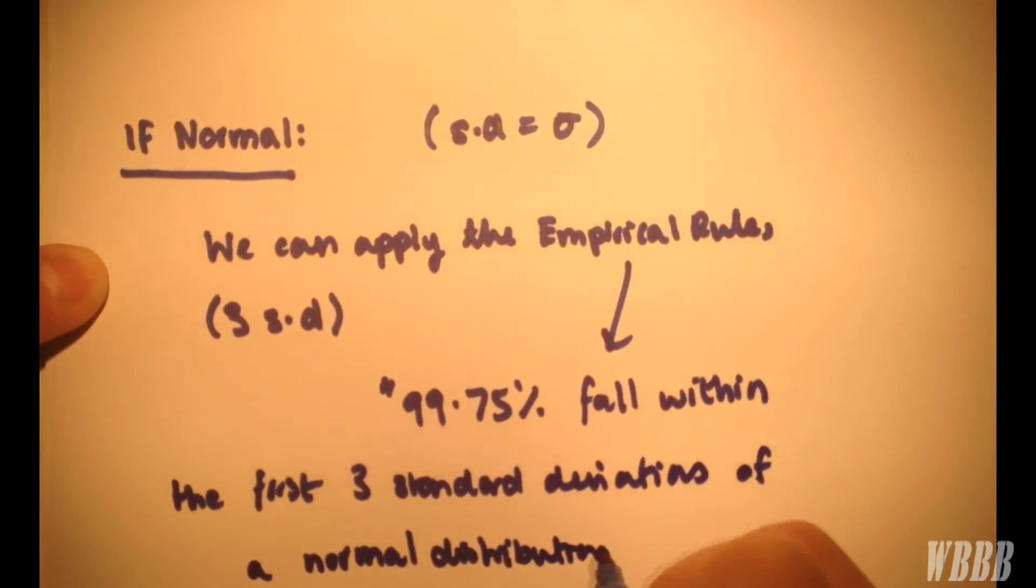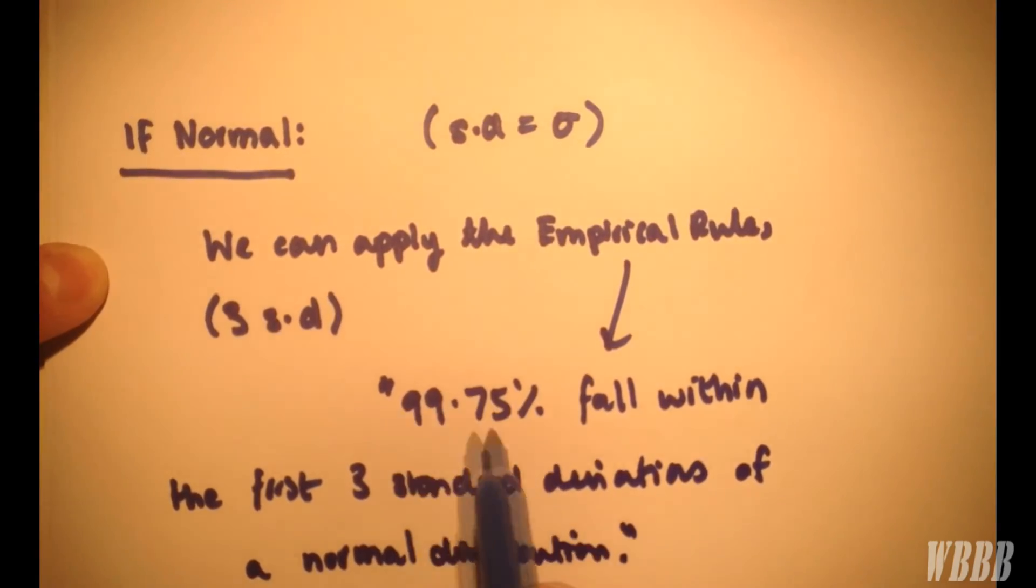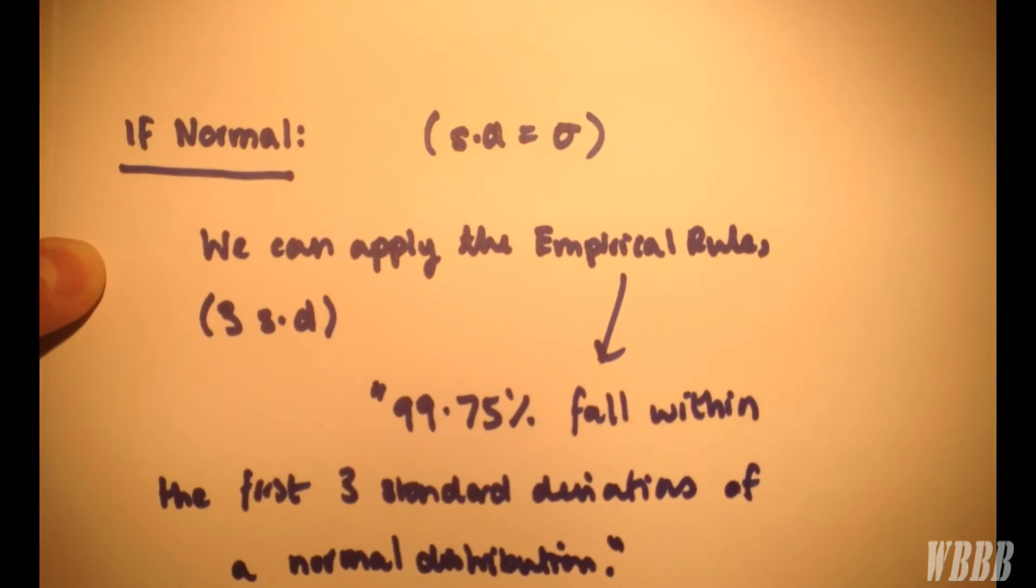So when our distribution is normal, we can model it with the empirical rule and get a much more demonstrative example of the effects. Thank you for watching.